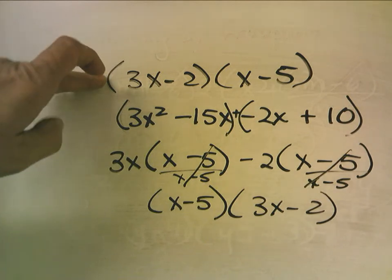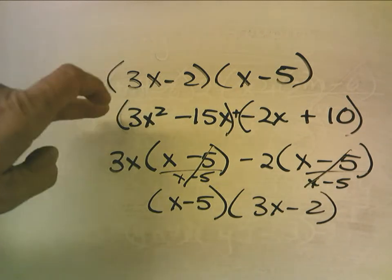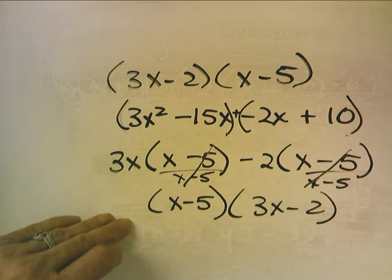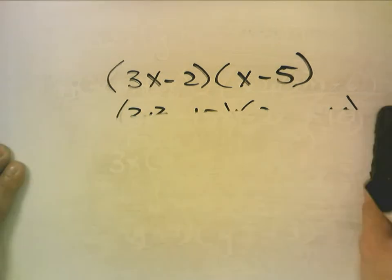So you see how it came full circle. You FOIL, you get four terms. You can factor by grouping, pull out a common factor, and you end up back where you started again.